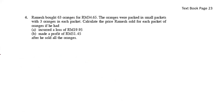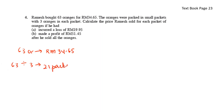Ramesh bought 63 oranges for RM34.65. The oranges were packed in small packets with 3 oranges each, giving 21 packets. To find the price per packet, divide RM34.65 by 21, which gives RM1.65 per packet.